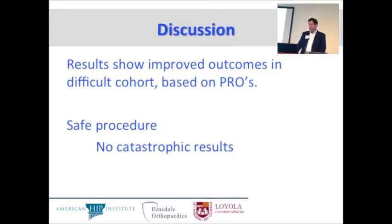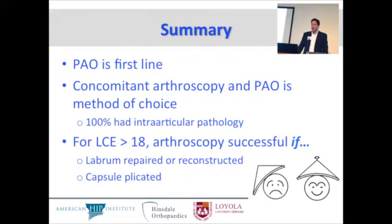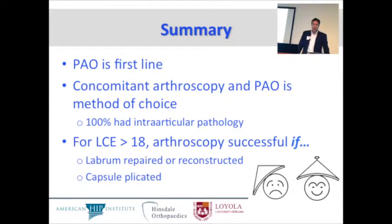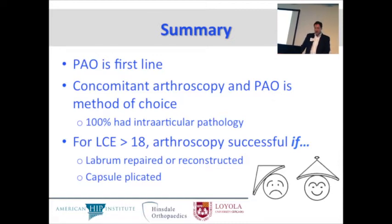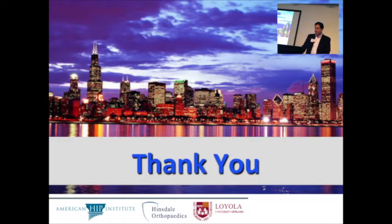In summary: PAO is the first line for dysplasia, period. Concomitant arthroscopy with PAO is our method of choice for dysplastic patients with a center edge angle of 18 or less, and 100% of those patients had intra-articular pathology in our series. For patients with borderline dysplasia — center edge angle of 19 to 25 — arthroscopy can be successful if the labrum is preserved, repaired, or reconstructed, and the capsule is plicated. Thank you.